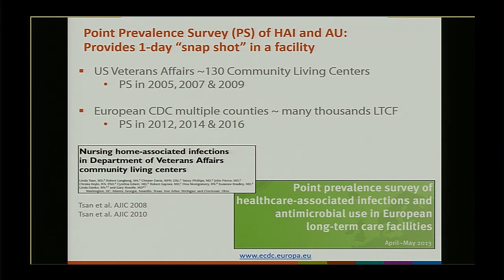The Point Prevalence Survey of Healthcare-Associated Infection and Antimicrobial Use is designed to provide a one-day snapshot in a facility at a given point in time. This method has been widely used throughout the world. We have some experience with it here in the United States through the U.S. Veterans Affairs Department, which has a cohort of about 130 community living centers — their types of nursing homes. They've conducted prevalence surveys in 2005, 2007, 2009, 2015, and 2017.